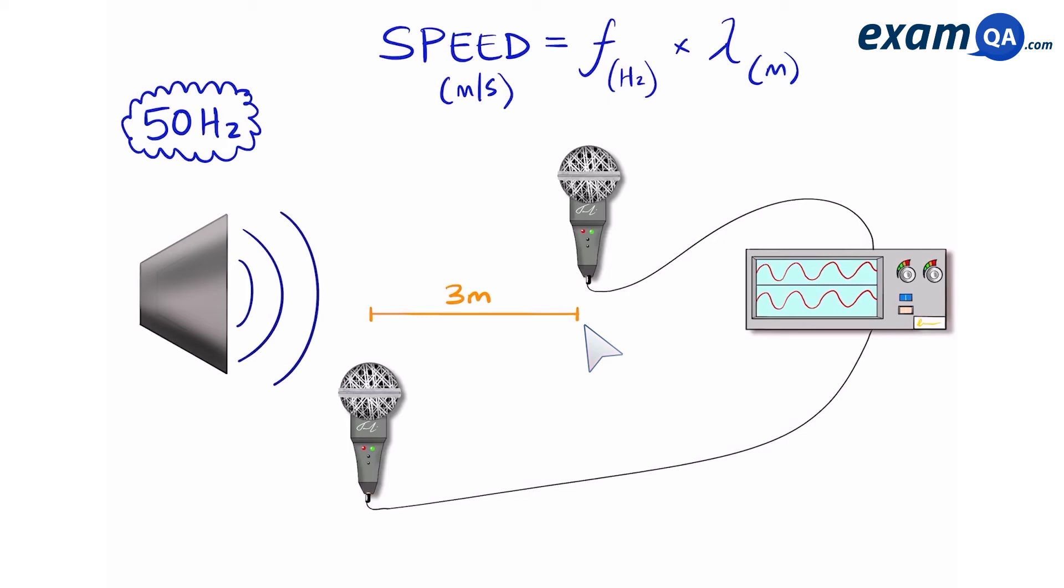So now that we have the distance for one wavelength and we have the frequency which was 50 hertz, we can multiply them together to give us the speed of sound. And that gives us a speed of 150 meters per second.